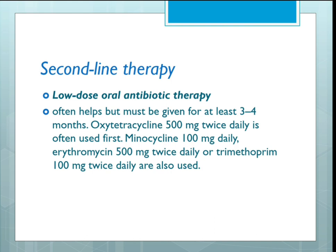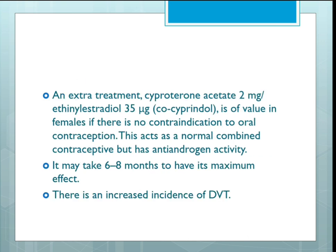Second-line therapy involves low-dose oral antibiotic therapy, which often helps but must be given for at least three to four months. Oxytetracycline 500 mg twice daily is often used first. Minocycline 100 mg daily, erythromycin 500 mg twice daily, or trimethoprim 100 mg twice daily are also used.